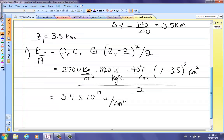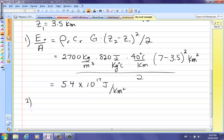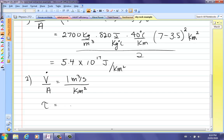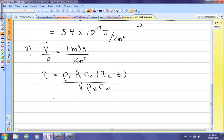Useful heat available per square kilometer. Number 2. Now we want the time constant. So we've got to look at that unit that we're given there. 1 cubic meter per second per square kilometer. That would be the volume rate flow per area. Because it's 1 cubic meter per second per kilometer squared. The formula for the time constant for that dry rock is density of the rock times area times specific heat capacity of the rock times Z2 minus Z1 divided by V dot times density of water, specific heat capacity of water.